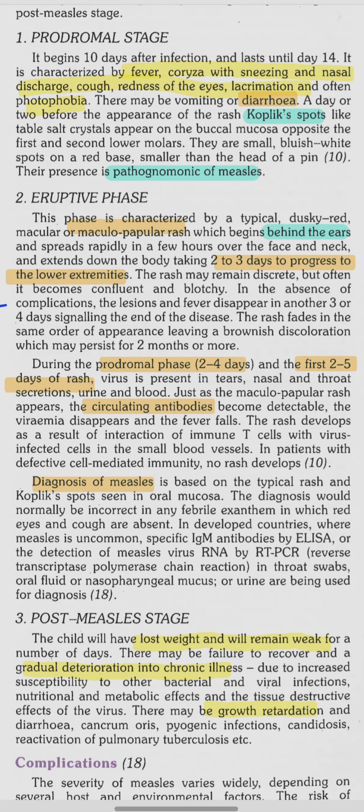The eruptive phase is characterized by a maculopapular rash, which begins behind the ears in the post-auricular region. The rash then spreads over the face and neck within a few hours, and progresses to the lower extremities within two to three days. Viral shedding is highest in the first two to five days of the rash and during the prodromal phase.